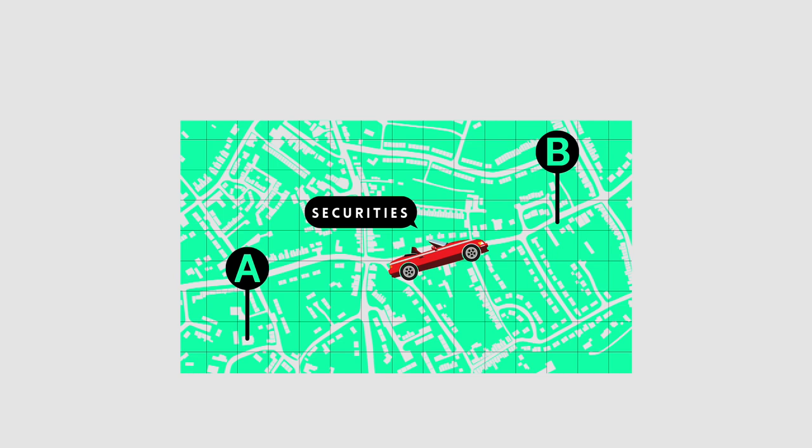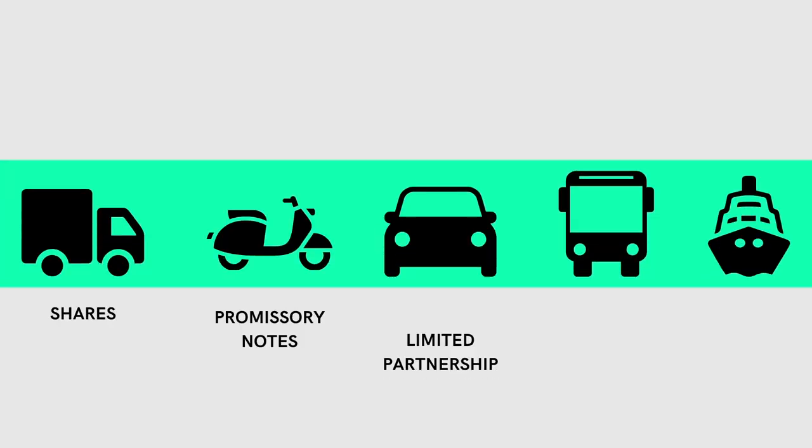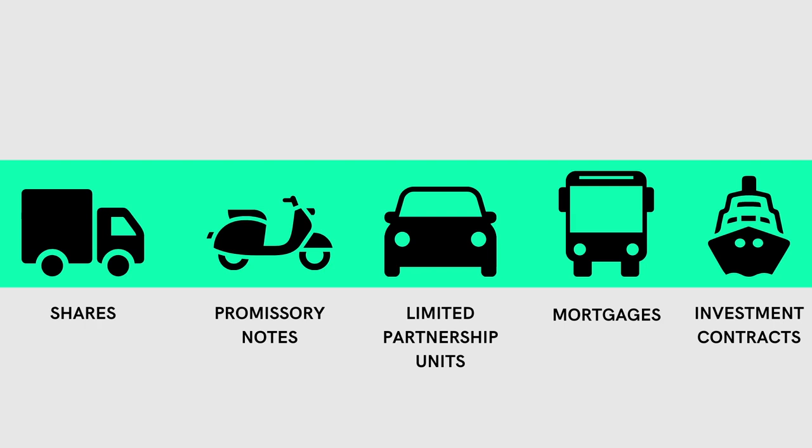So what are securities? Securities are the investment vehicle that the money you are raising is being used for. Think of it this way — a security is like an actual vehicle getting you from point A to point B. What kind of vehicle you use doesn't really matter; it could be a truck, a moped, a car, or a bus. If you're driving that vehicle alone, the securities commission doesn't care where you go. But the moment you pick up people and put them in your vehicle, you need to follow certain rules and regulations. Securities can include but are not limited to shares, promissory notes, limited partnership units, mortgages, and investment contracts — pretty much everything investors use on a daily basis.